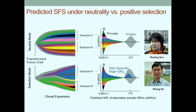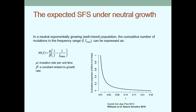Different tumor subsections may be under differential selective pressure due to nutrients or vasculature. Work from Rick Durrett, and also work that Trevor will talk about, provides a nice theoretical solution for what the site frequency spectrum or variant allele frequency distribution should look like under neutral growth in a well-mixed population. We can now look at the cumulative proportion of SNVs and their allele frequencies relative to this theoretical expectation.